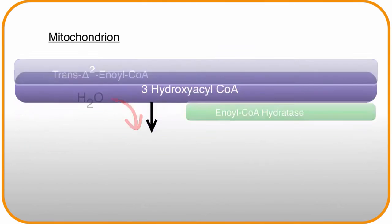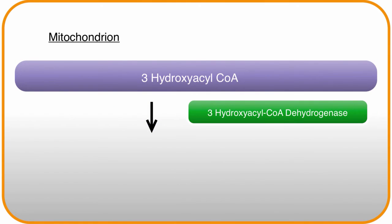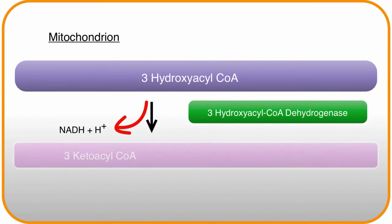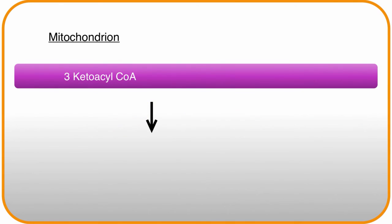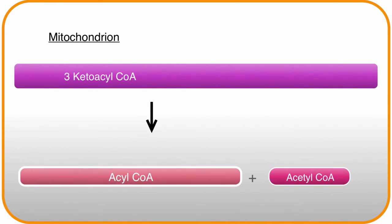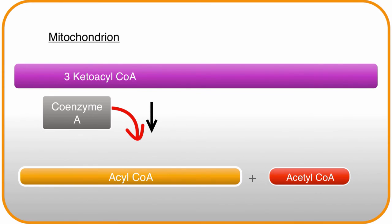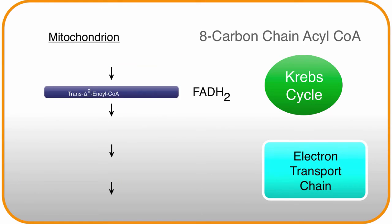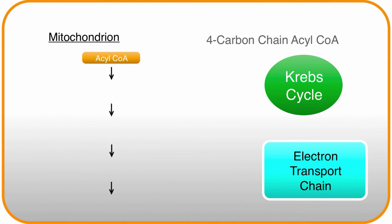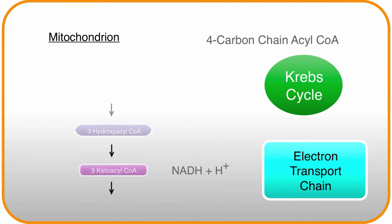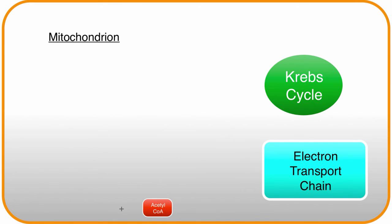The third reaction, using the enzyme 3-hydroxyacyl-CoA dehydrogenase, performs the familiar step of creating NADH and H+, which also creates the product 3-ketoacyl-CoA. The final step is the actual cleaving of an acetyl-CoA from the main chain of acyl-CoA, using another coenzyme A with the help of the enzyme thiolase. These four steps keep going until the last split of a four-carbon acyl-CoA, when the four carbons split into two two-carbon molecules, both of which are acetyl-CoA molecules.